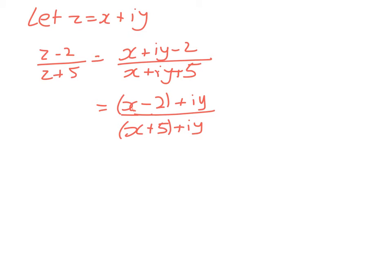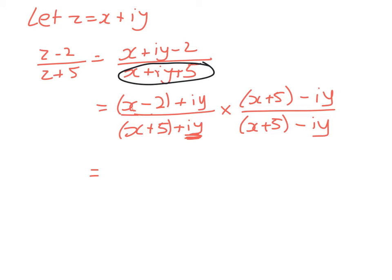Now when I'm working with complex numbers, I never like having anything imaginary in the bottom line, so I multiply by the conjugate. The conjugate here is x plus 5 minus iy. Now if you hadn't reordered that, the chances that you muck up the conjugate are pretty high. So I'm going to times the numerator and denominator by the same thing. We're still not really sure where we're going here, but we're just doing some good expanding and then we'll go back to the problem.